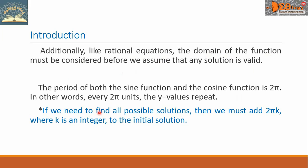If we need to find all possible solutions, then we must add 2πk, where k is an integer, to the initial solution.